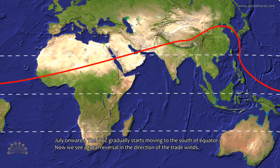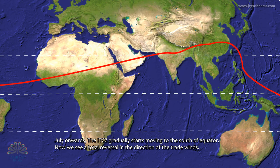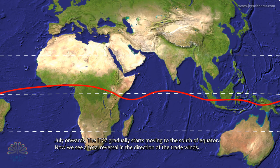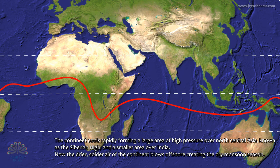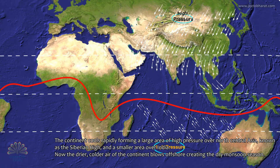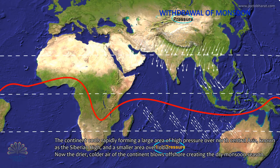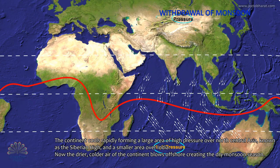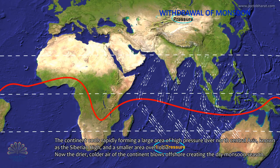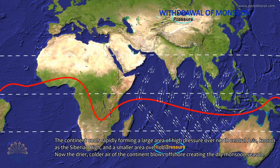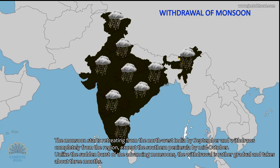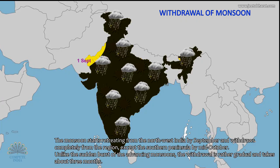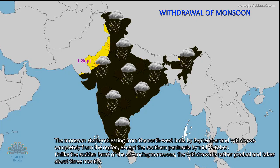The ITCZ gradually starts moving to the south of the equator. There is a total reversal in the direction of the trade winds. The continent cools rapidly, forming a large area of high pressure over north central Asia known as the Siberian High, and a smaller area over India. The drier, colder air of the continent blows offshore, creating the dry monsoon season. The monsoon starts retreating from northwest India by September and withdraws completely from the region, except the southern peninsula, by mid-October.